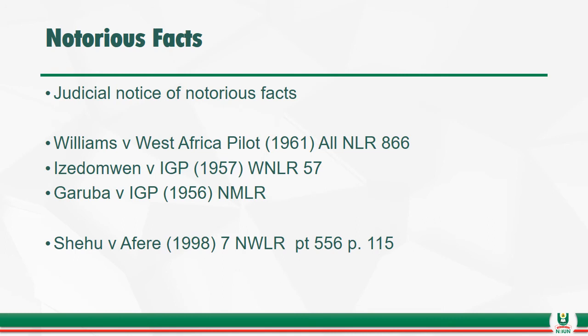The court takes judicial notice of the fact that there are seven days in a week, that ordinarily human gestation takes nine months, that there are 24 hours in a day, and that normally in a year we have rainy season between May and June or July. These are notorious facts.